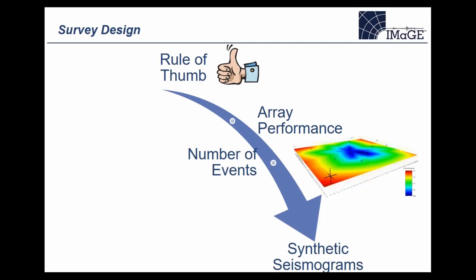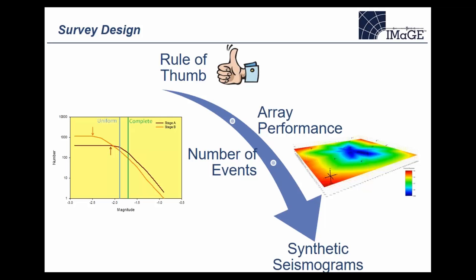Another tool is comparing two different arrays — say surface and downhole — in terms of sensitivity and expected number of events. If we make assumptions about the frequency-magnitude relationship, effectively assuming a B-value (the slope of that relationship), we can rank the arrays in terms of relative number of events that would be recorded. This is particularly important prior to the project to set expectations of what we expect to achieve.